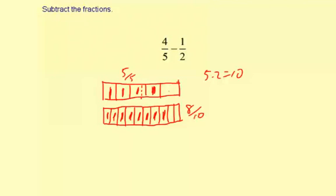Now we have 8 tenths, and we're going to take away 1 half. Now if we have 10 tenths as a whole unit, we're going to take away half of those. That would be 5 tenths we take away. So we take away 1, 2, 3, 4, 5,